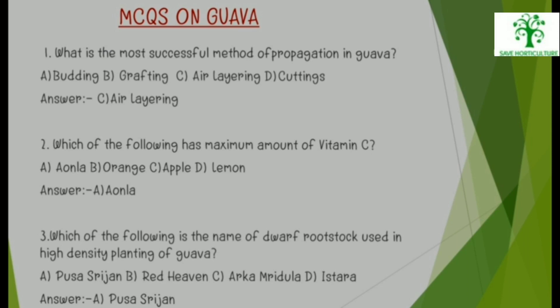3. Which of the following is the name of the dwarf rootstock used in high-density planting of Guava? Options: Pusa Srijan, Red Fleshed, Arka Mridula, or Stara. The right answer is Pusa Srijan.